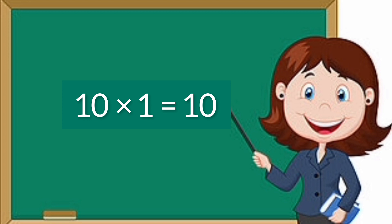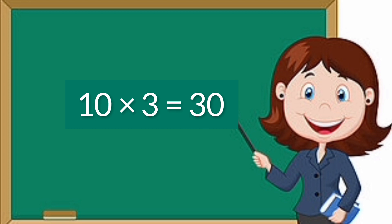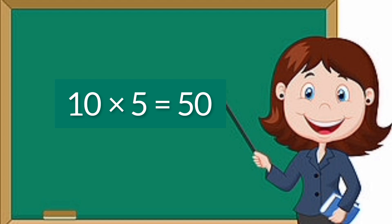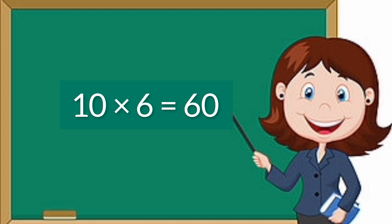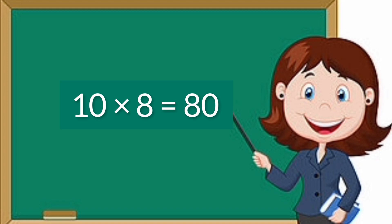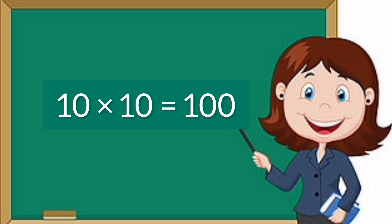Ten ones are 10. Ten twos are 20. Ten threes are 30. Ten fours are 40. Ten fives are 50. Ten sixes are 60. Ten sevens are 70. Ten eights are 80. Ten nines are 90. Ten tens are 100.